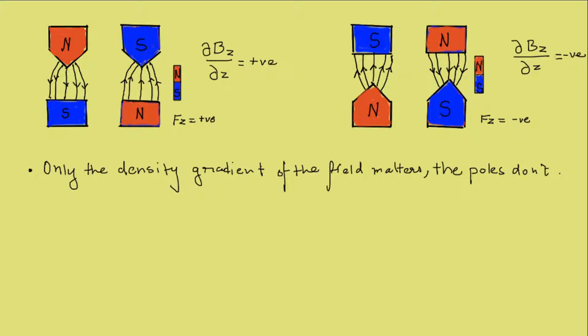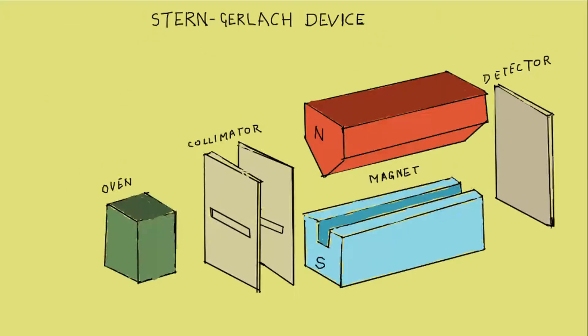Now, coming to the schematic of the Stern-Gerlach device. This device has an oven, collimators, magnets and a detector. A collimated beam of vaporized silver atoms are passed through the magnetic arrangement, which has a pointed magnet at the top and a flat magnet at the bottom. The magnet arrangement produces an inhomogeneous magnetic field with a positive magnetic field gradient in the z direction.